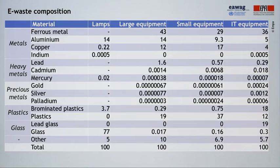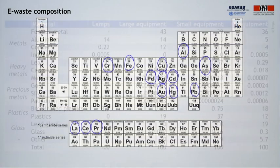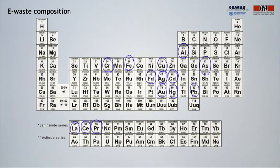This table shows the material composition of four e-waste categories in percentage. In fact, up to 60 elements from the periodic table can be found in complex electronics. In spite of many of them being scarce and recoverable, recycling rates are very low, often due to the current high economic costs to do so. This, of course, represents a threat to resource security over the long term.